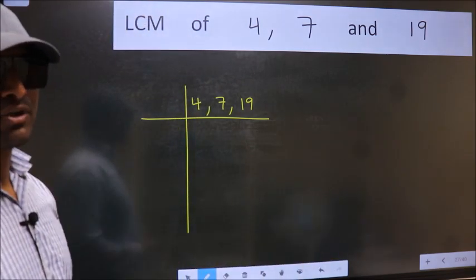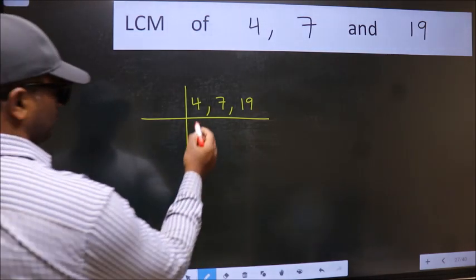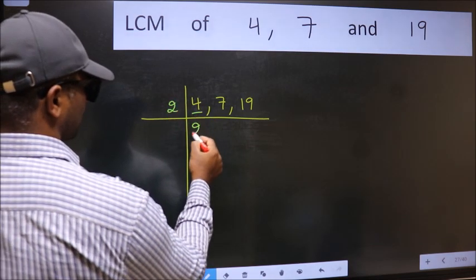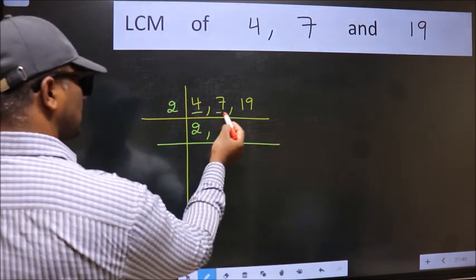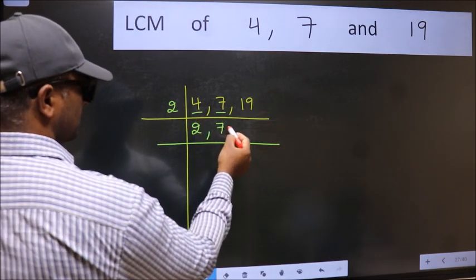Now we should focus on the first number which is 4 here. 4 divided by 2 is 2. The other number 7 not divisible by 2 so we write it down as it is.